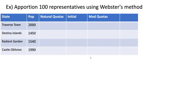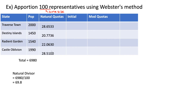Now let's look at another example that isn't quite so simple. Apportion 100 representatives using Webster's method, so 100 is our house size. We find our total population by adding up all the state populations, then find our natural divisor: total population divided by house size gives a natural divisor of 69.8. We divide each state population by 69.8 to get our natural quotas. Rounding normally for the initial allocation: 28.6 becomes 29, 20.7 rounds up to 21, 22.0 rounds to 22, 28.5 rounds up to 29, giving a sum of 101, which is too large.